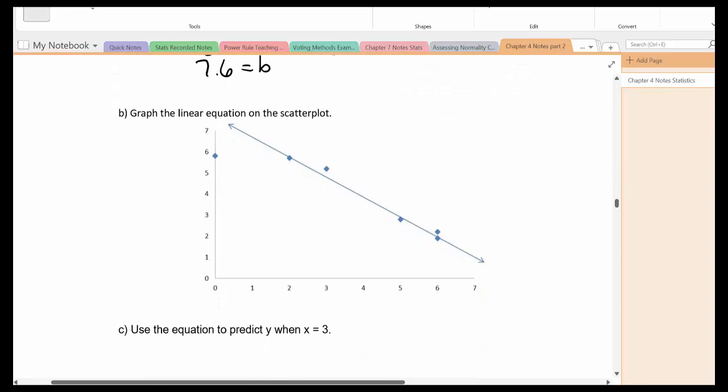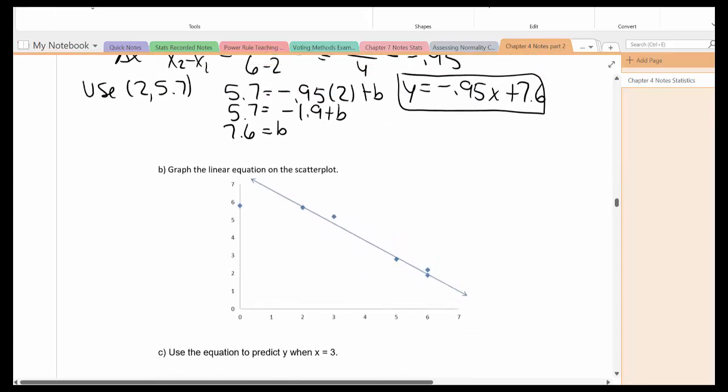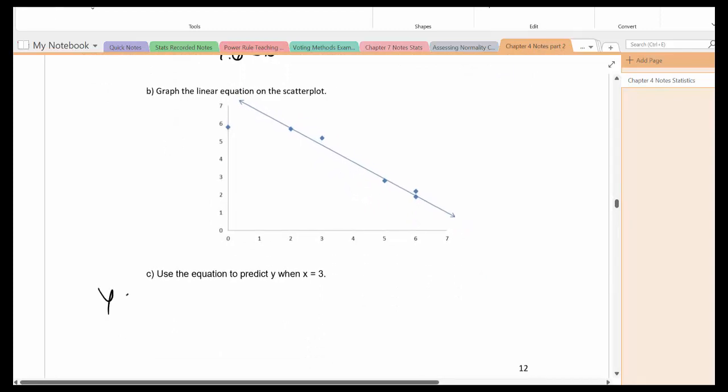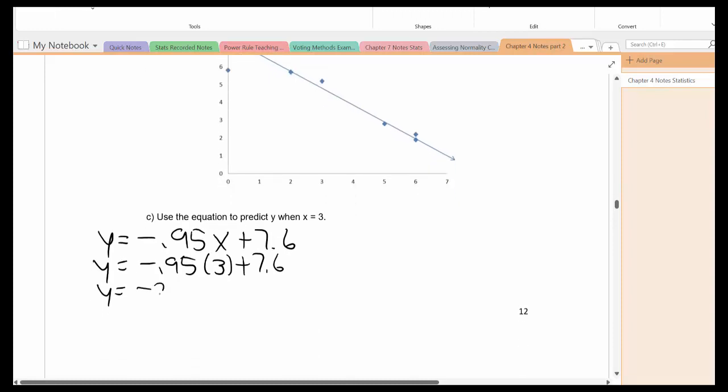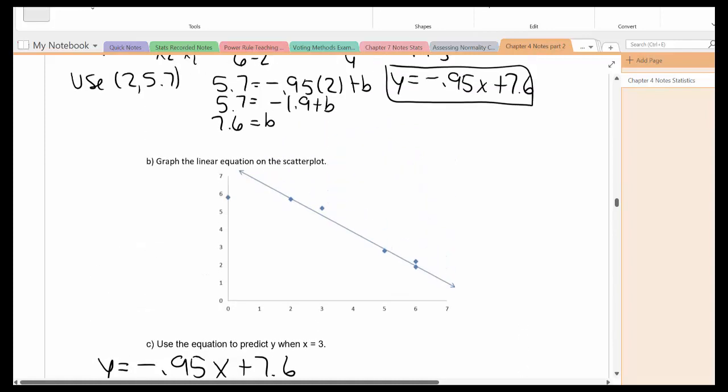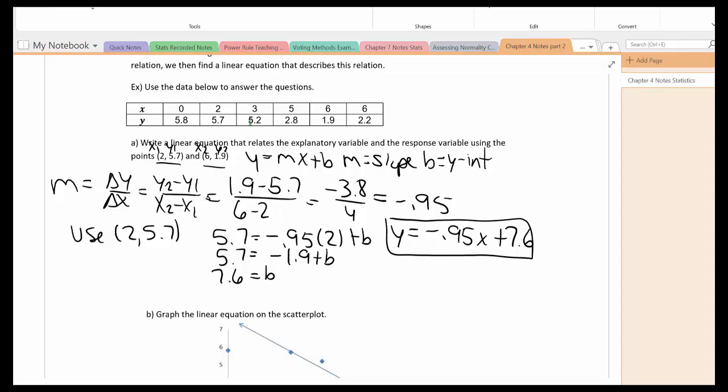Let's take a look at part c. So now I want to use the equation to predict y when x is equal to 3. Here's the equation we came up with part a. Plug in 3 for x. Multiply, then add. So notice with the equation we got the y value being 4.75. But the actual observation is 5.2. So there's a little bit of an error between the observed y value and the predicted y value.